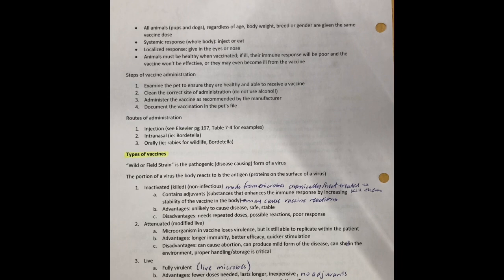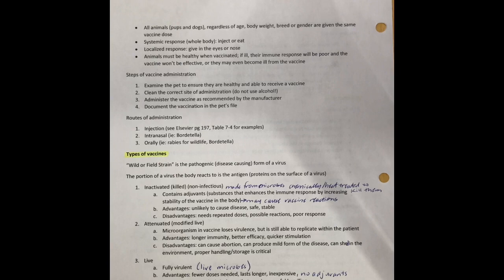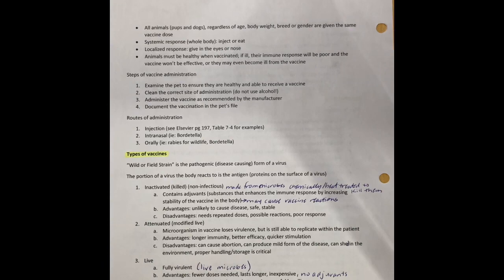We could have a fully live vaccine — it's fully virulent, meaning we're giving an injection of the actual virus. This doesn't really get done anymore because it's not very safe. Advantages: fewer doses are needed, that immunity is going to last a lot longer because it's the real thing, it's fairly inexpensive because you don't have to kill or modify it, and there are no adjuvants so a much less chance of reaction. Disadvantages: there is virulence, so there's potential to get sick from the vaccine, and there's potential for you to get sick from just handling it.